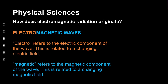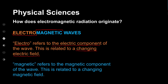In the phrase electromagnetic waves, electro refers to the electric component of the wave — it is related to a changing electric field, meaning electromagnetic waves are in part made up of a changing electric field. The second part, magnetic, again refers to the magnetic component of the wave, relating how a component of the wave is made up of a changing magnetic field.